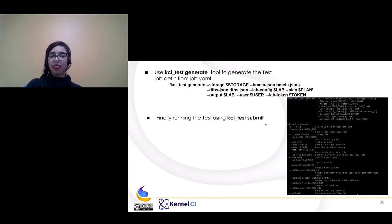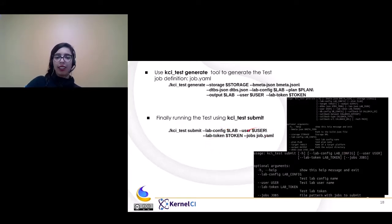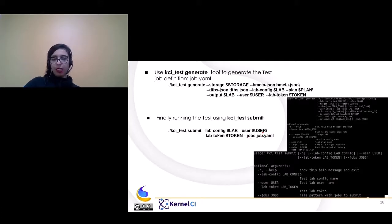Finally, we are running the test using "casiya test submit". It's simple — you just mention the lab, the lab user, the lab token, and provide the job.yaml file. This was the part where we generate and run tests.